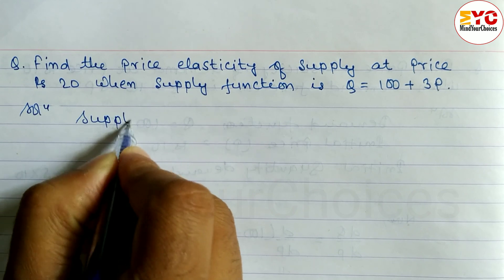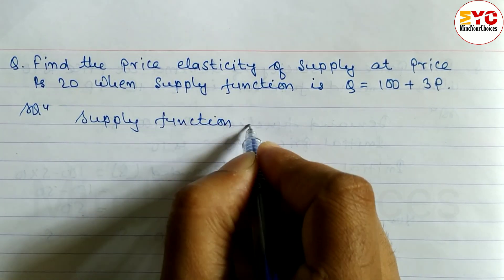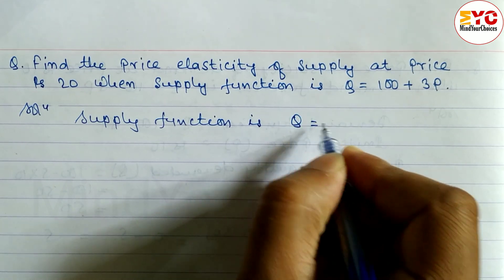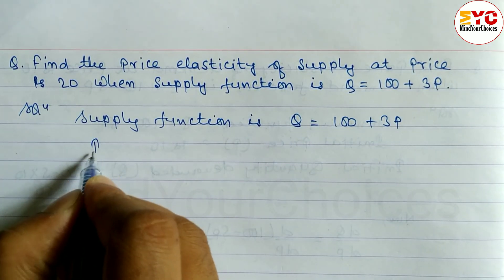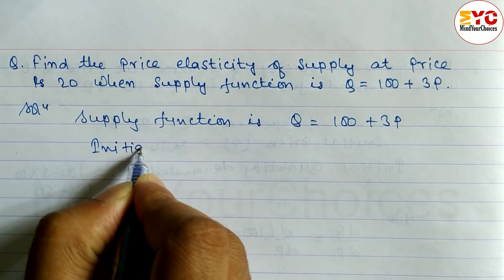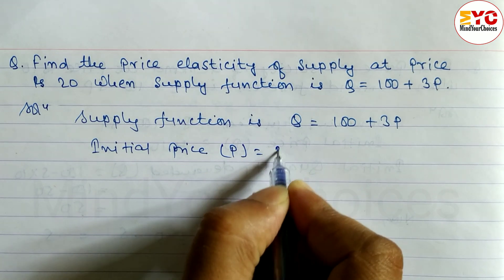Supply function is Q equals 100 plus 3P. Initial price P is equal to Rs. 20.